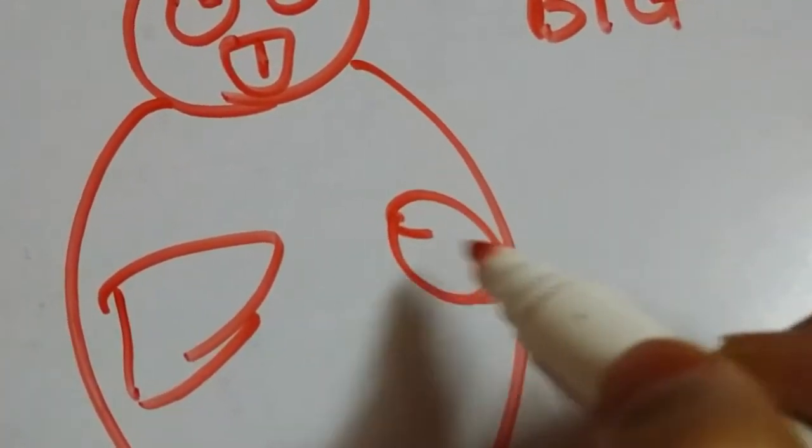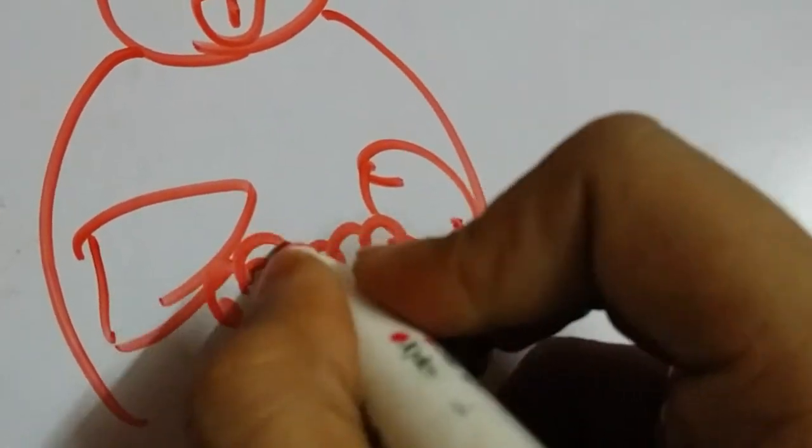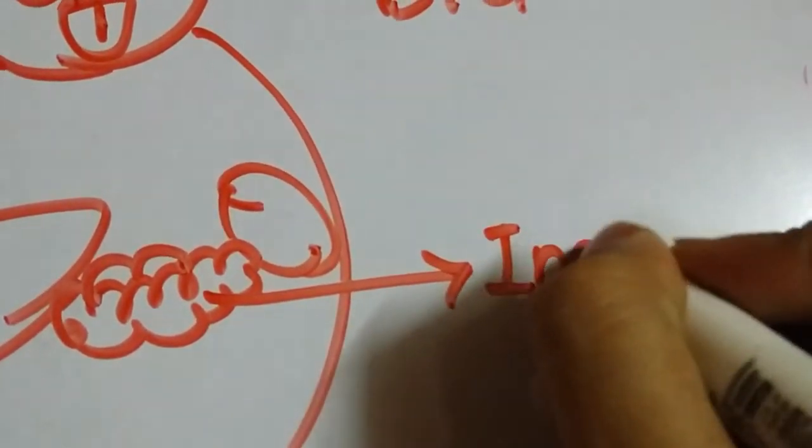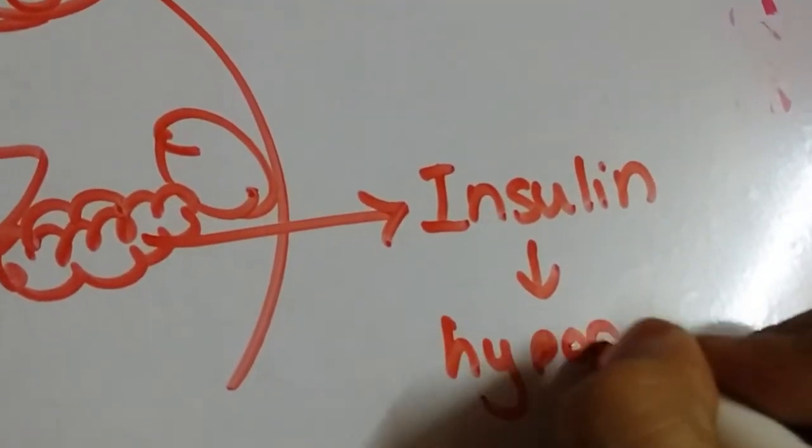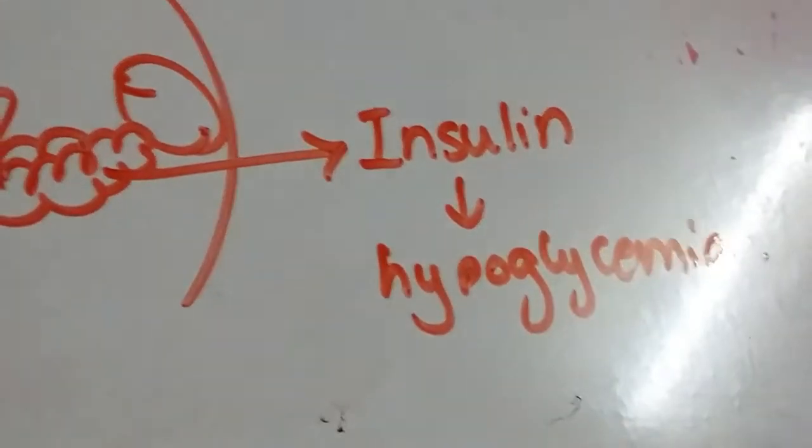There's also a big pancreas, and the big pancreas secretes a lot of insulin which leads to hypoglycemia.